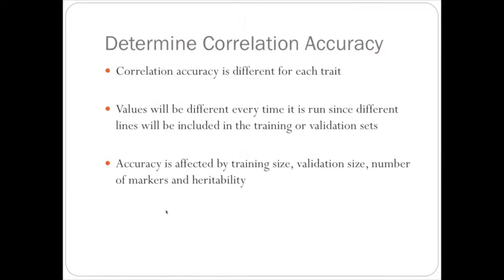So again, the correlation accuracy is different for each trait. And the values will be different every time it is run, since different lines will be included in the training or validation sets. And accuracy is affected by many things, including training size, validation size, number of markers, heritability, and even just the trait itself.